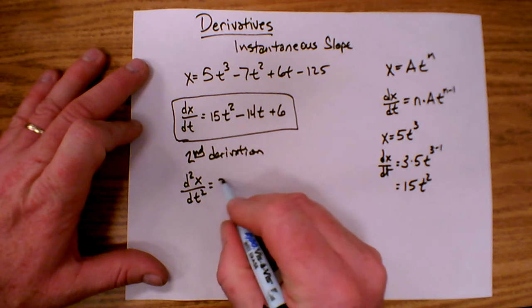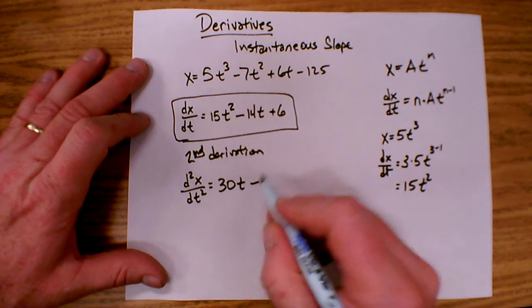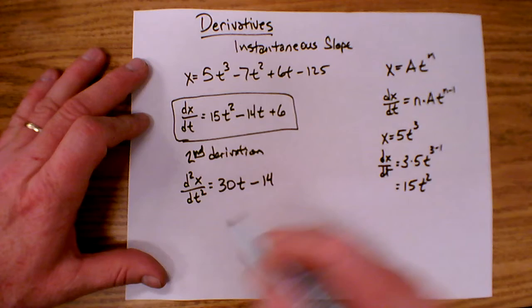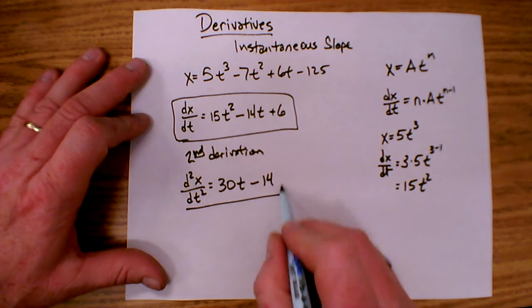And so this becomes then 2 times 15 t to the 2 minus 1, so t to the 1, minus 1 times 14 t to the 0. And then the derivative of a constant is always going to be just 0. So that is the second derivative.